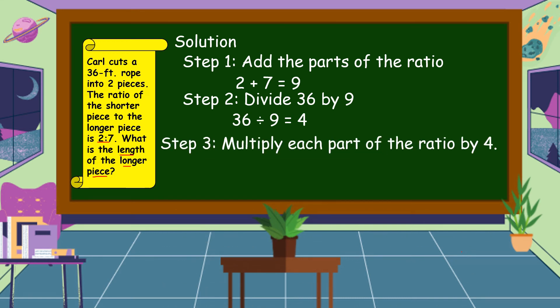2 × 4 = 8, and this is the shorter piece.